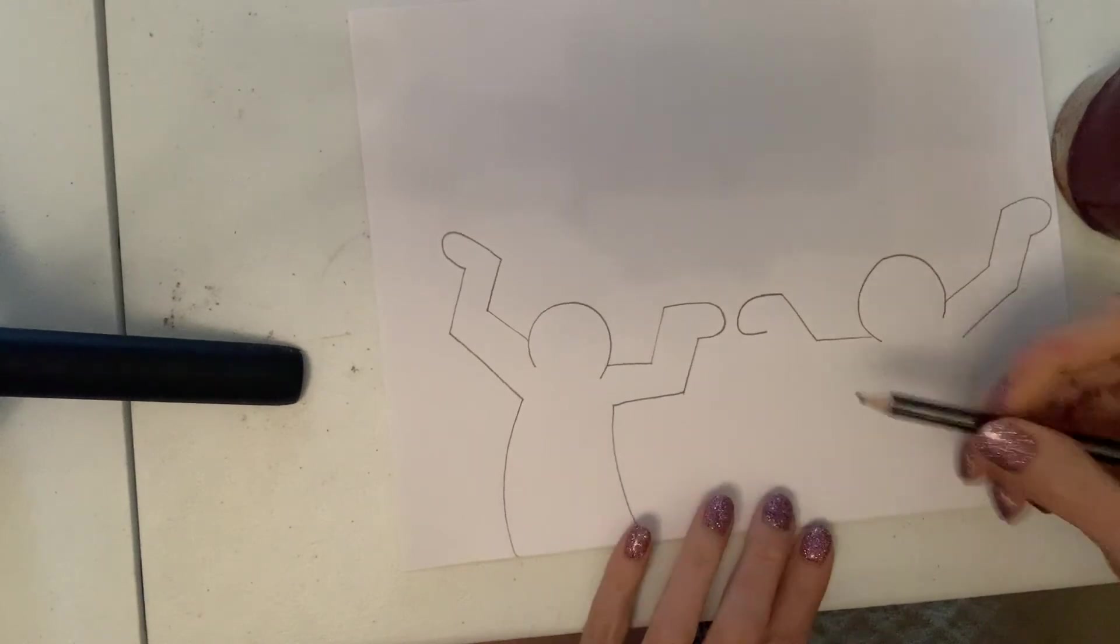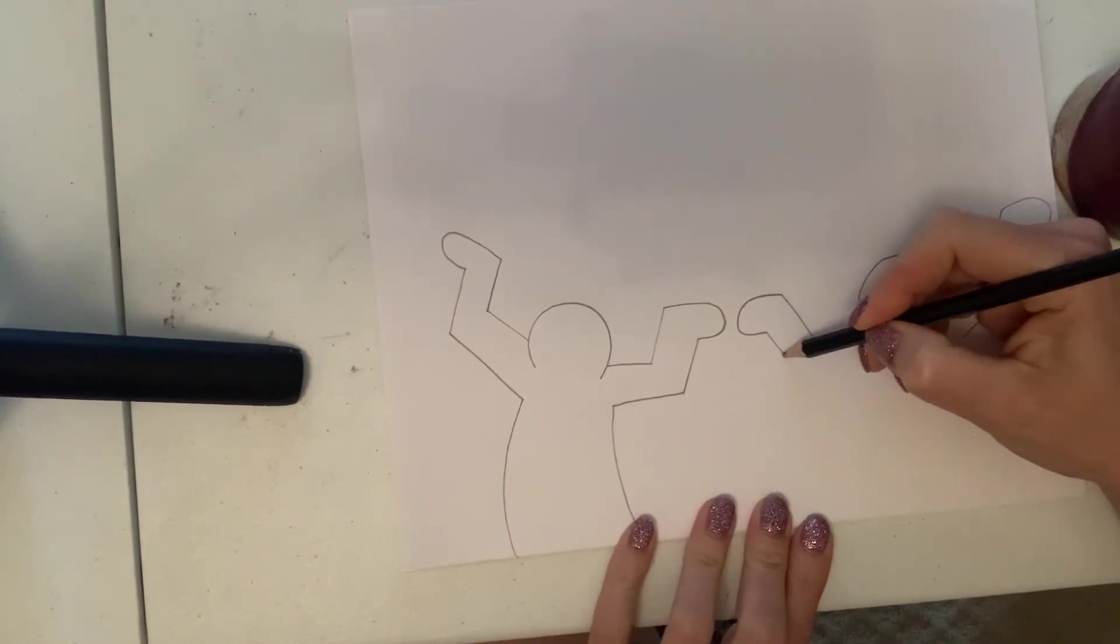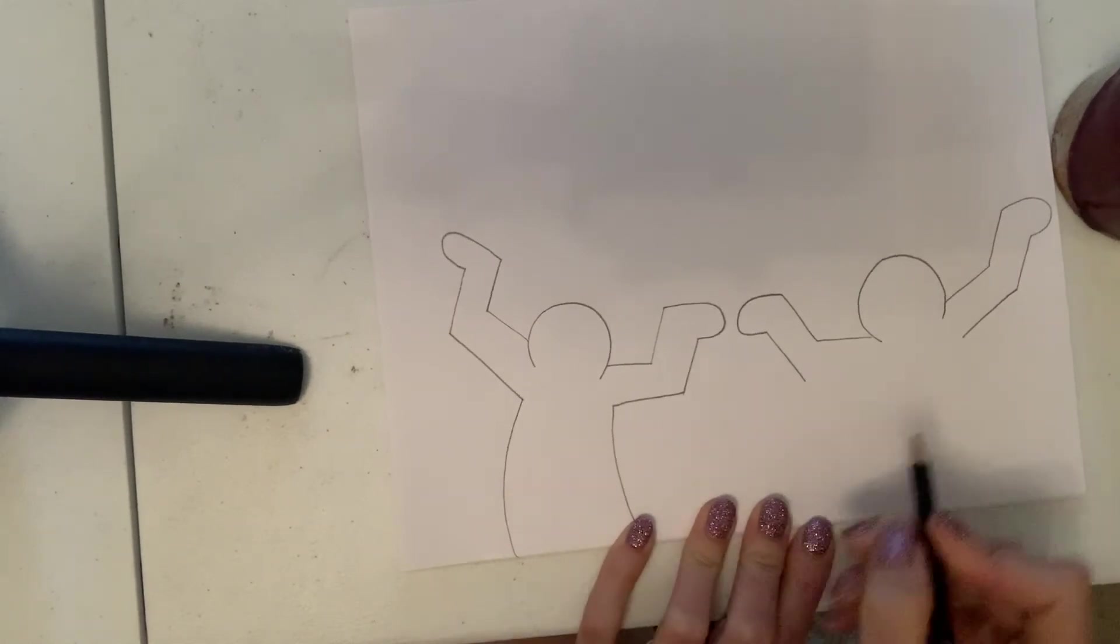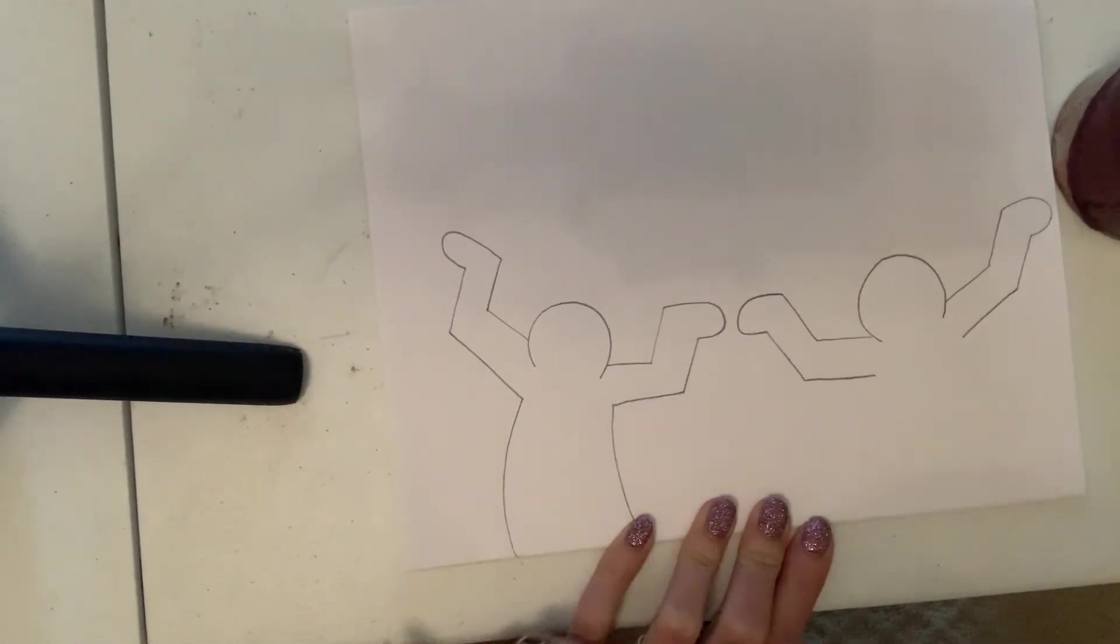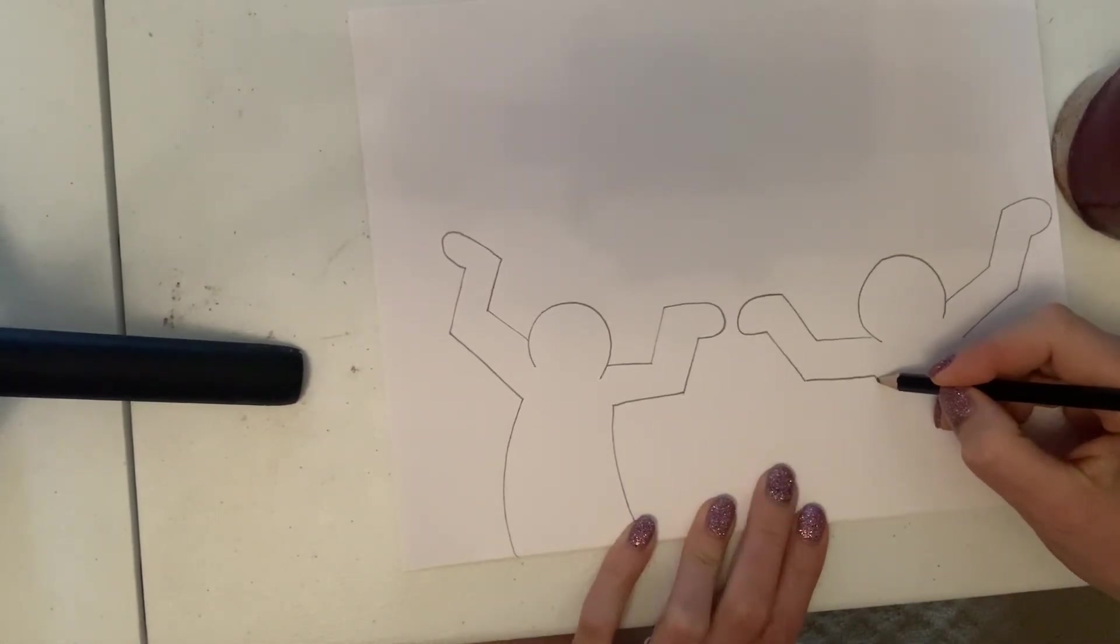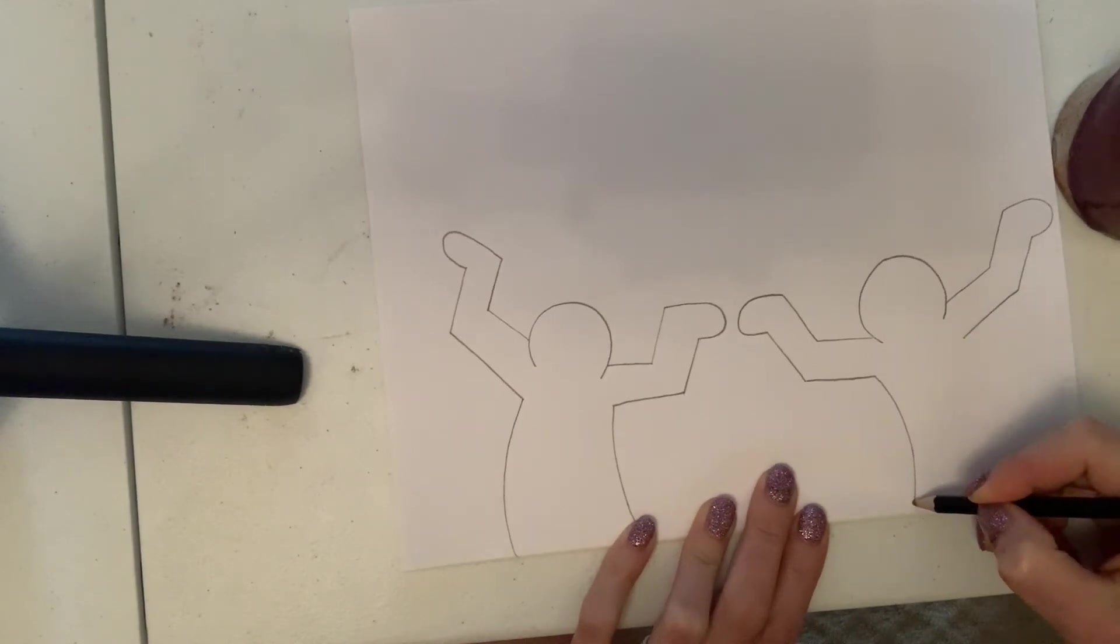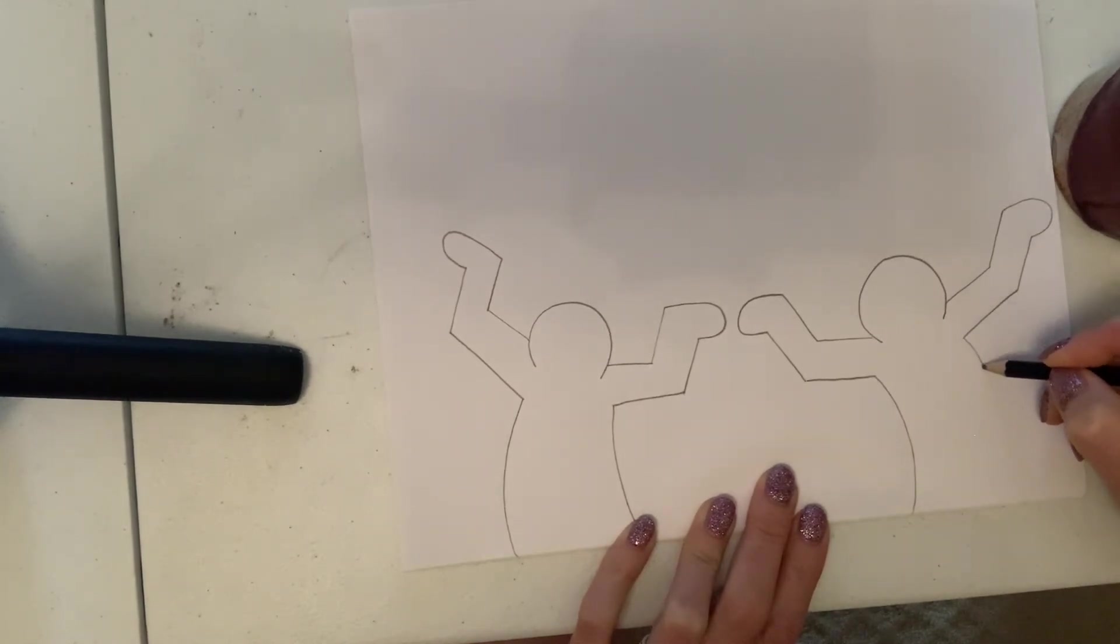Next we'll do the bottom of the arm. Next we'll add the body curving around towards the outside.